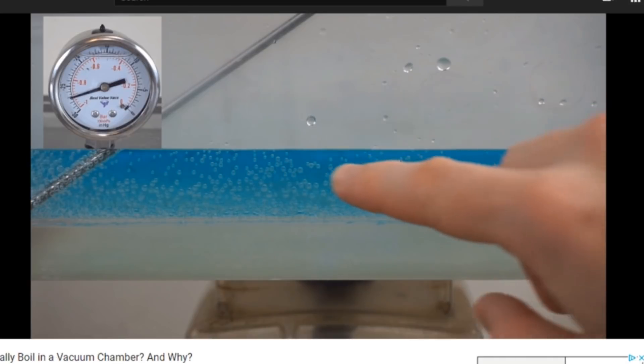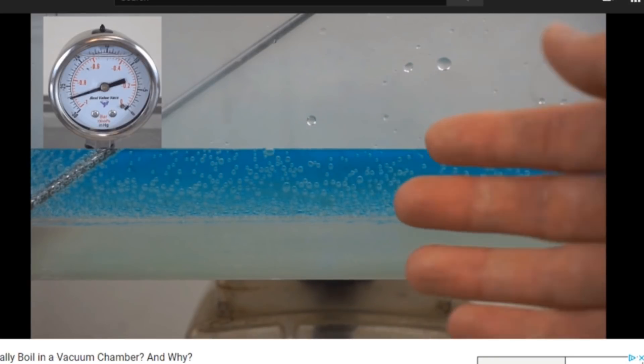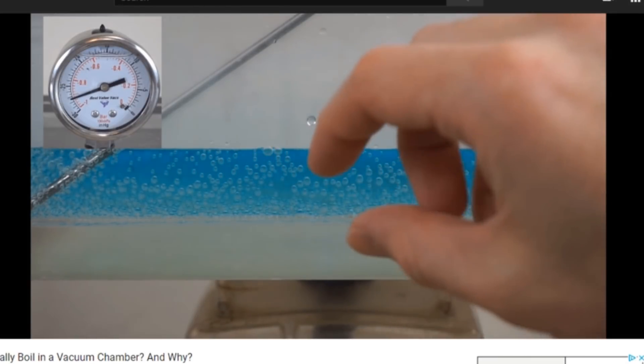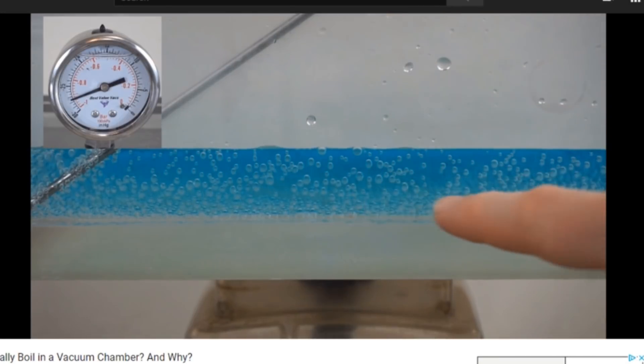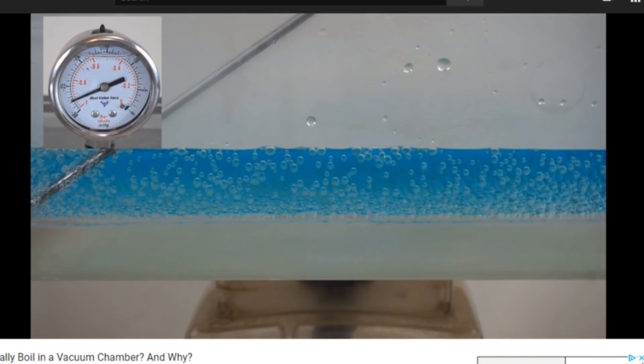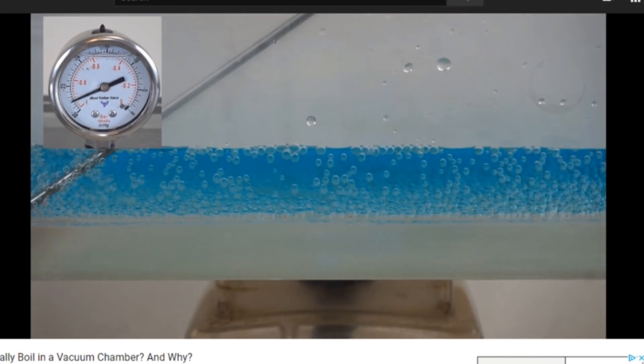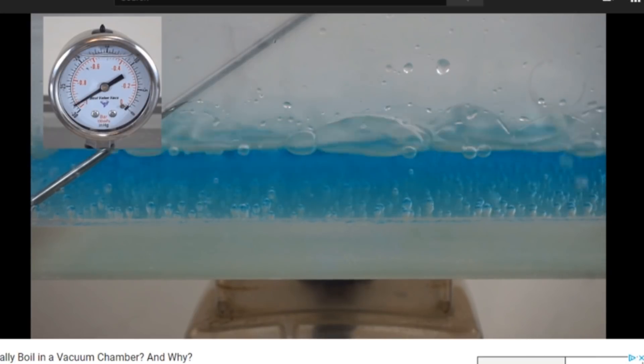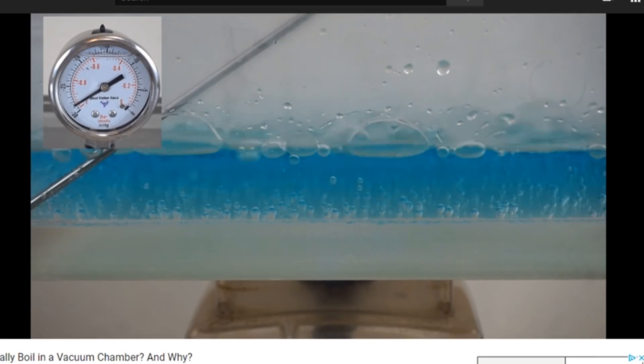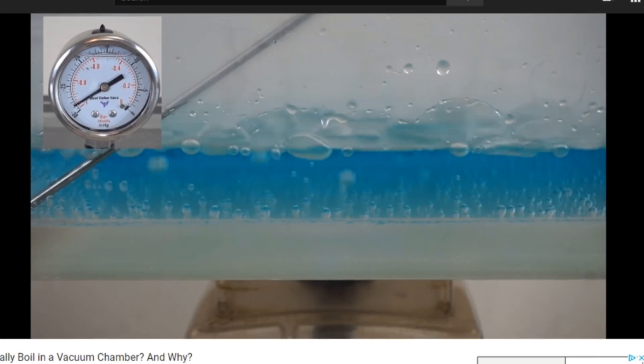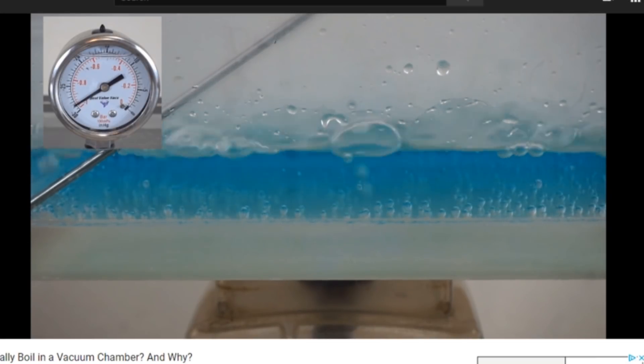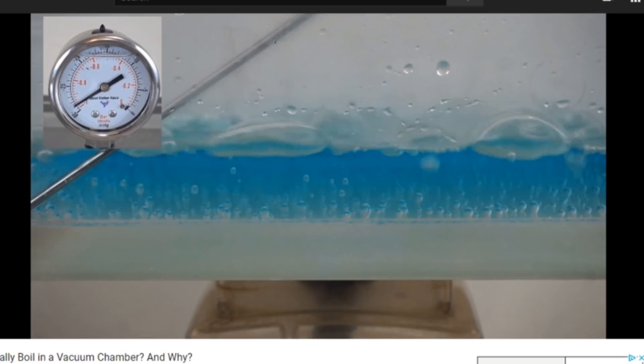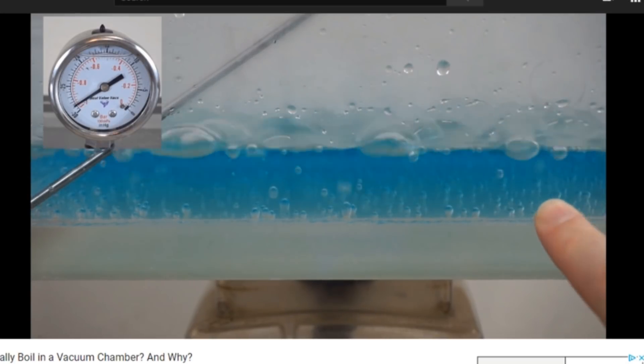This is the air that was dissolved in the liquid. At lower pressure, it dissolves out of the liquid and back into the atmosphere. And so this is not boiling yet. So we're now at less than 0.1 atmospheres, way beyond the atmosphere at Mount Everest, and you can see it's rapidly boiling now.